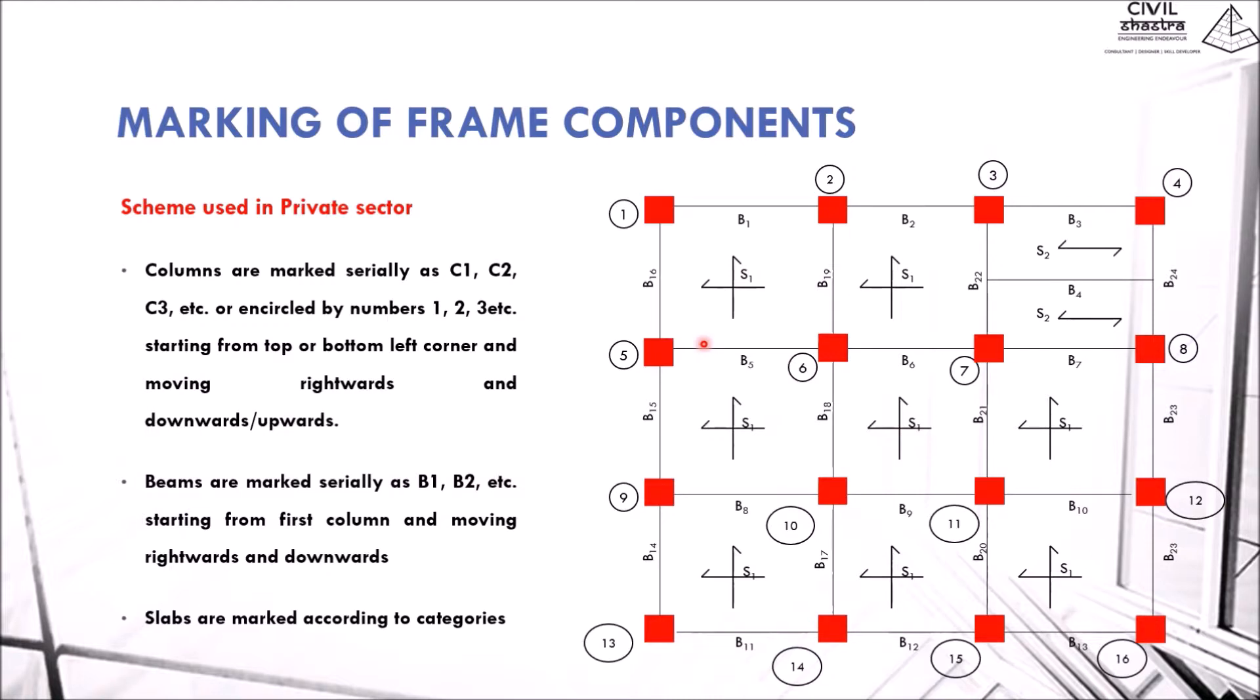This is how the marking should be done. Generally, there is also grid reference method and column reference method. Only grid reference method and the private sector method are used. Grid reference can be preferred when there is symmetry in the planning, whereas the private sector method can be used when there is an asymmetrical kind of structure where you cannot put so many columns in a single grid. This is how the marking will be done for various structure members.